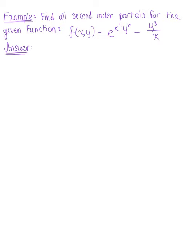Find all second order partials for the given function. We have f of xy equal to the natural exponential raised to x to the fourth times y to the sixth minus y cubed divided by x. The first thing I'm going to do is rewrite this function as the natural exponential raised to x to the fourth times y to the sixth, and rewrite the rational expression as minus y cubed times x to the negative one.